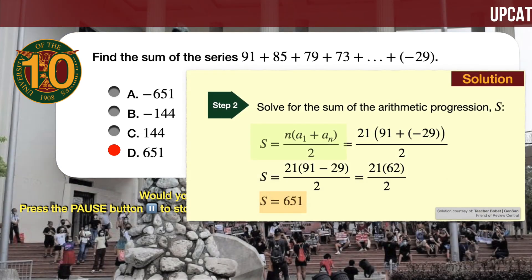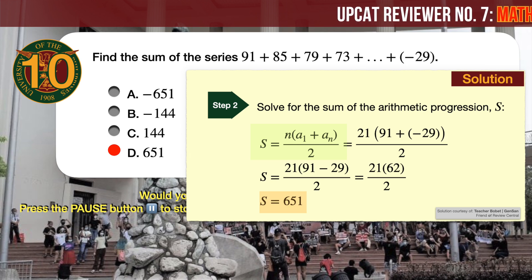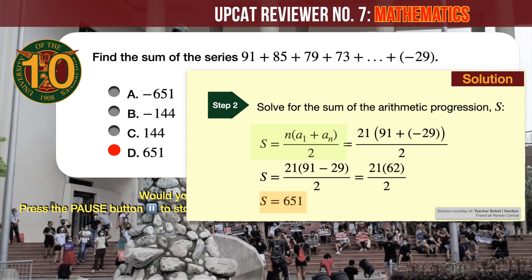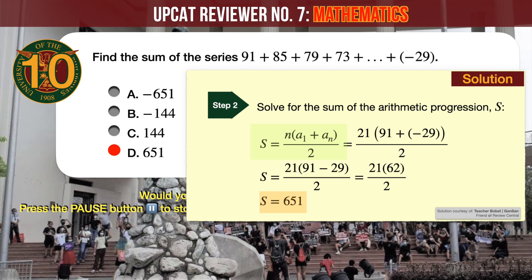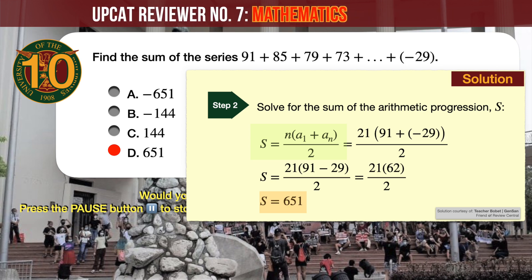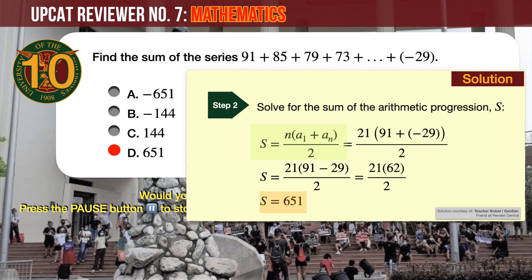To find the sum of the arithmetic progression, use the formula S equals n times (a1 plus a_n) over 2. Substituting n equals 21, a1 equals 91, and a_n equals minus 29, we quickly arrive at 651 as the final and correct answer.